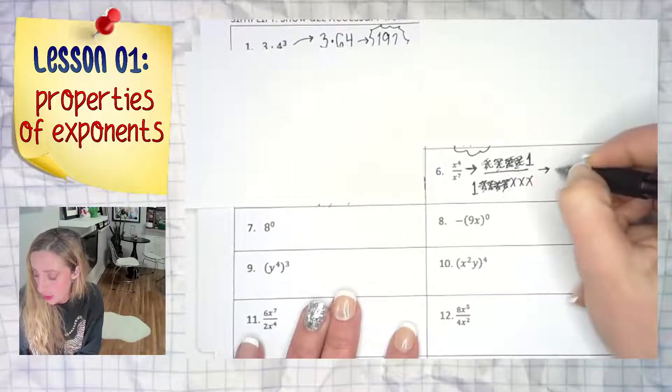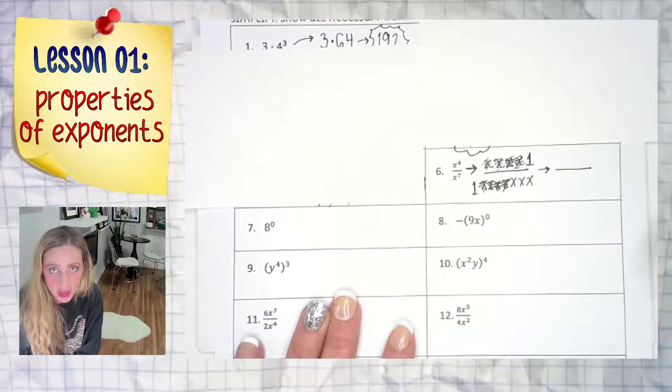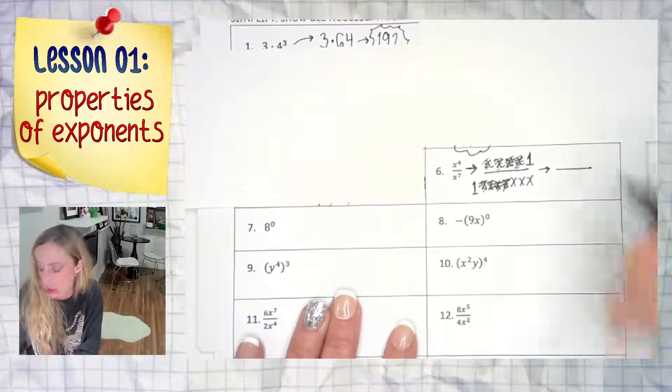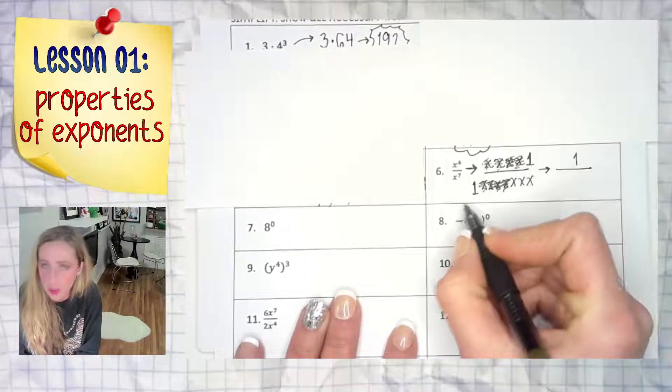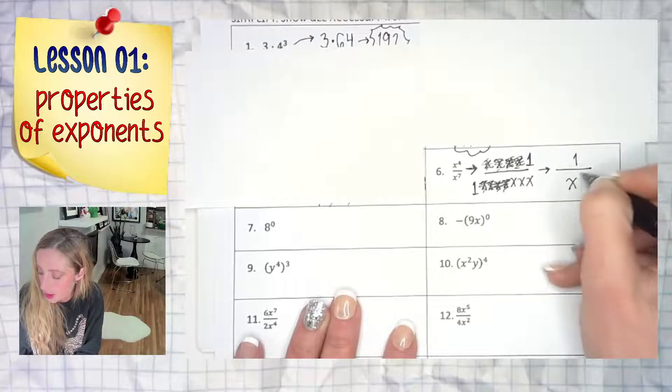So what does that leave us with? Well, you can't leave nothing on top, and it isn't nothing on top - it's a one. And then on bottom we certainly don't need that one; it's just x to the third power.